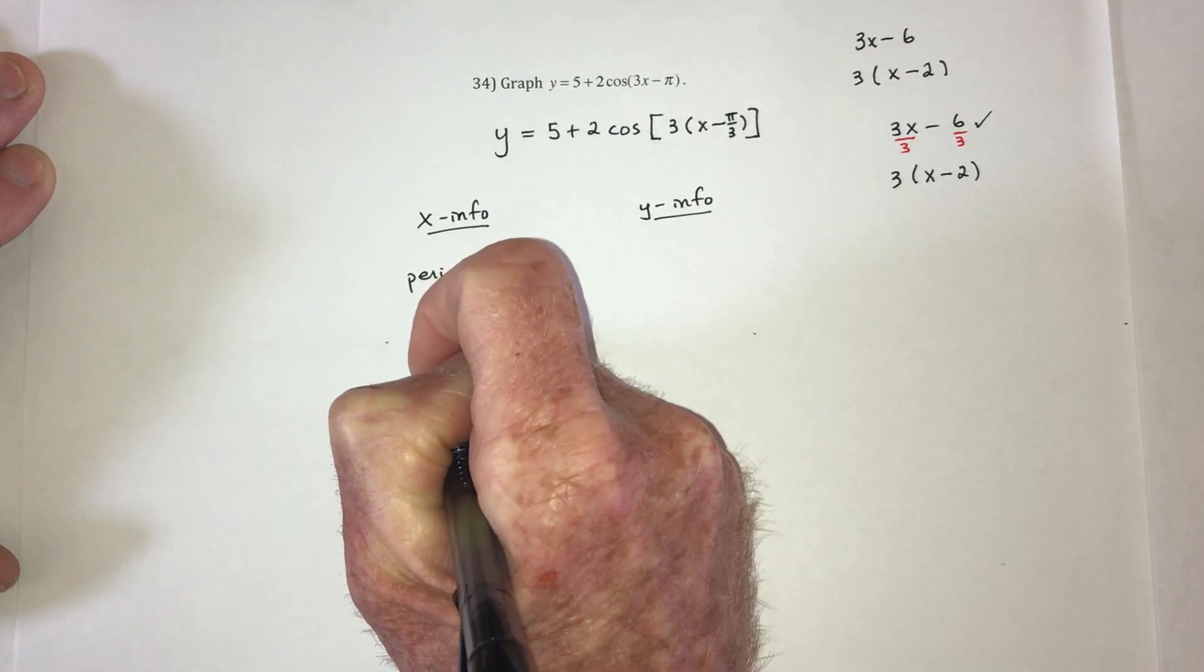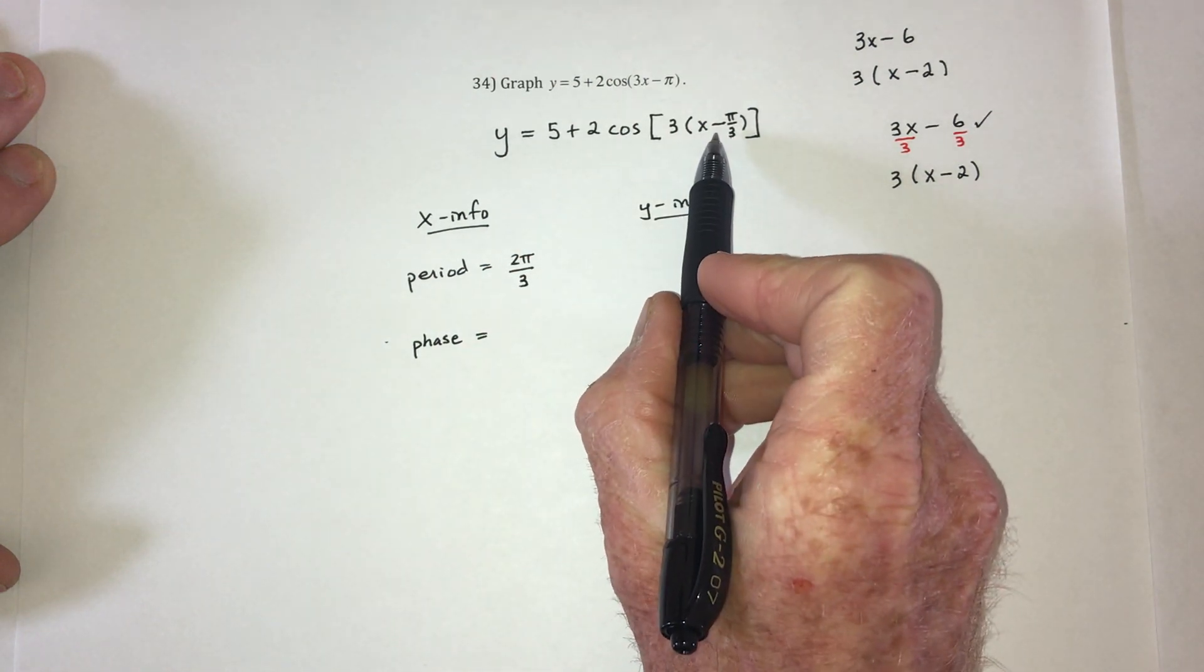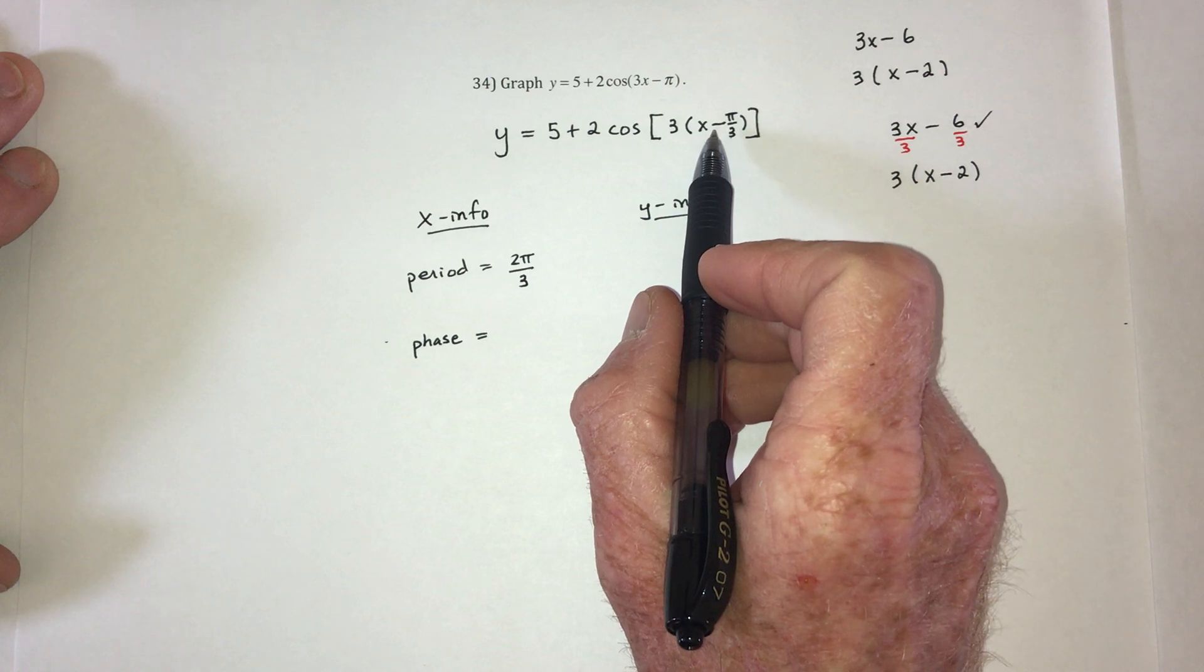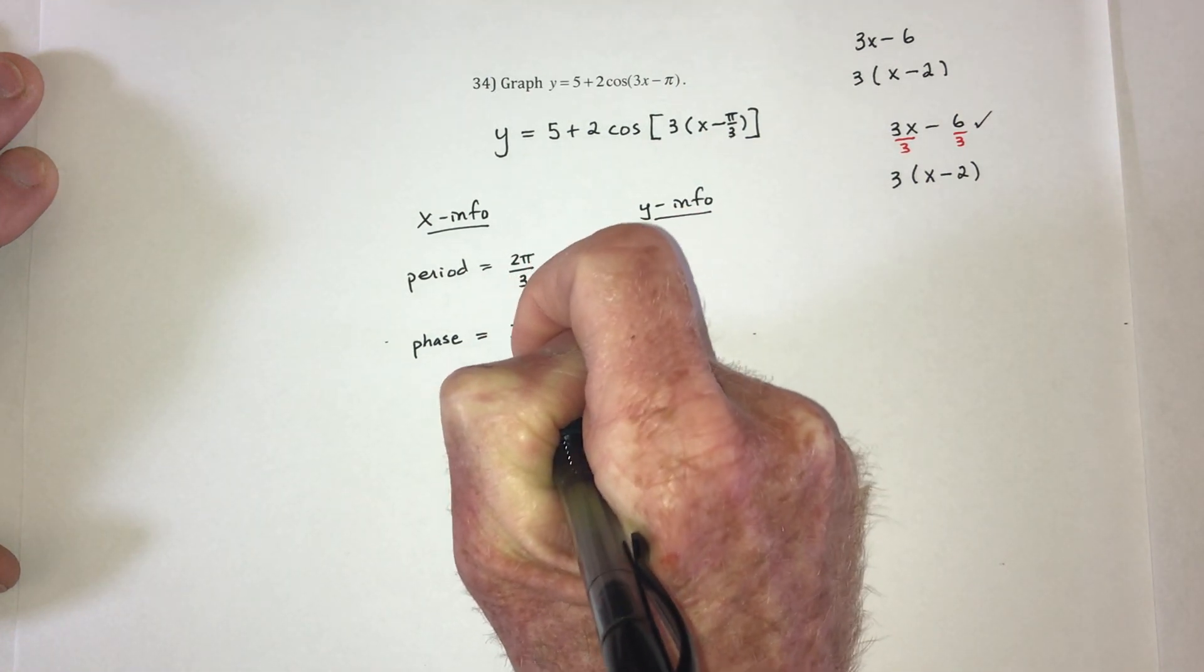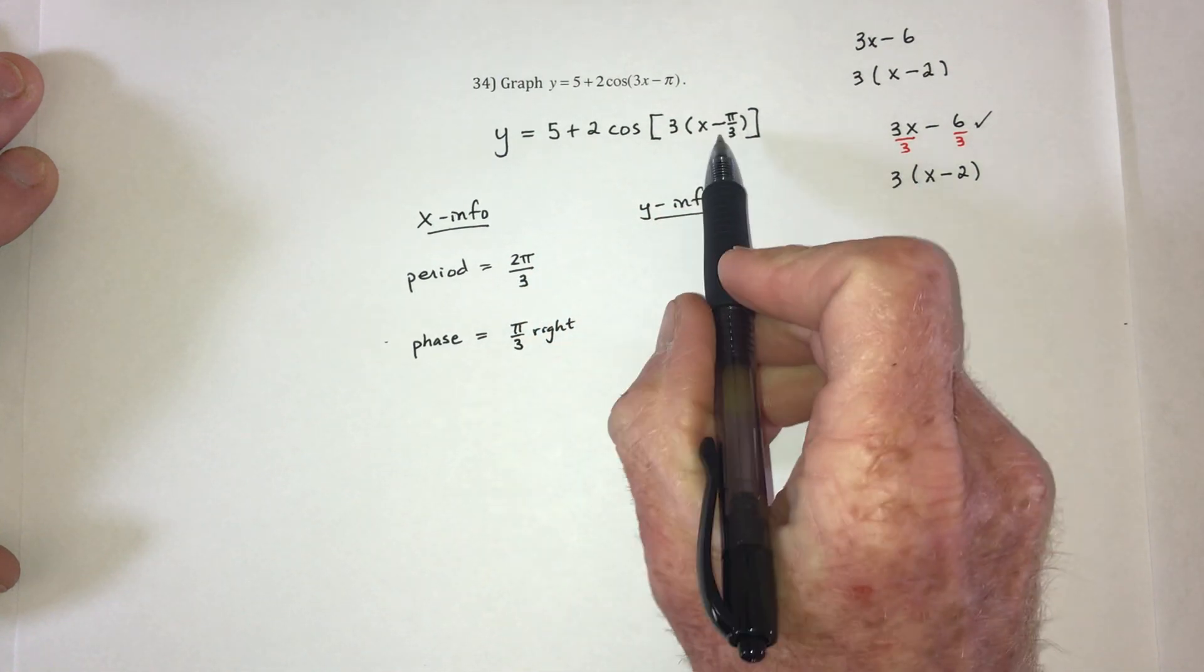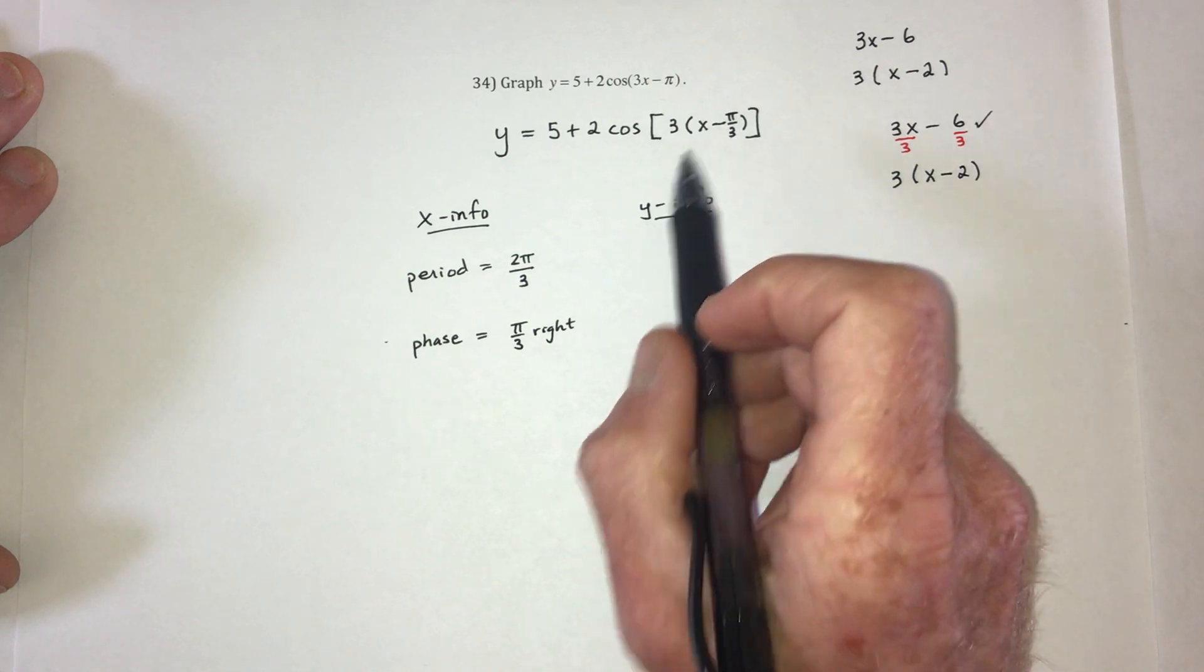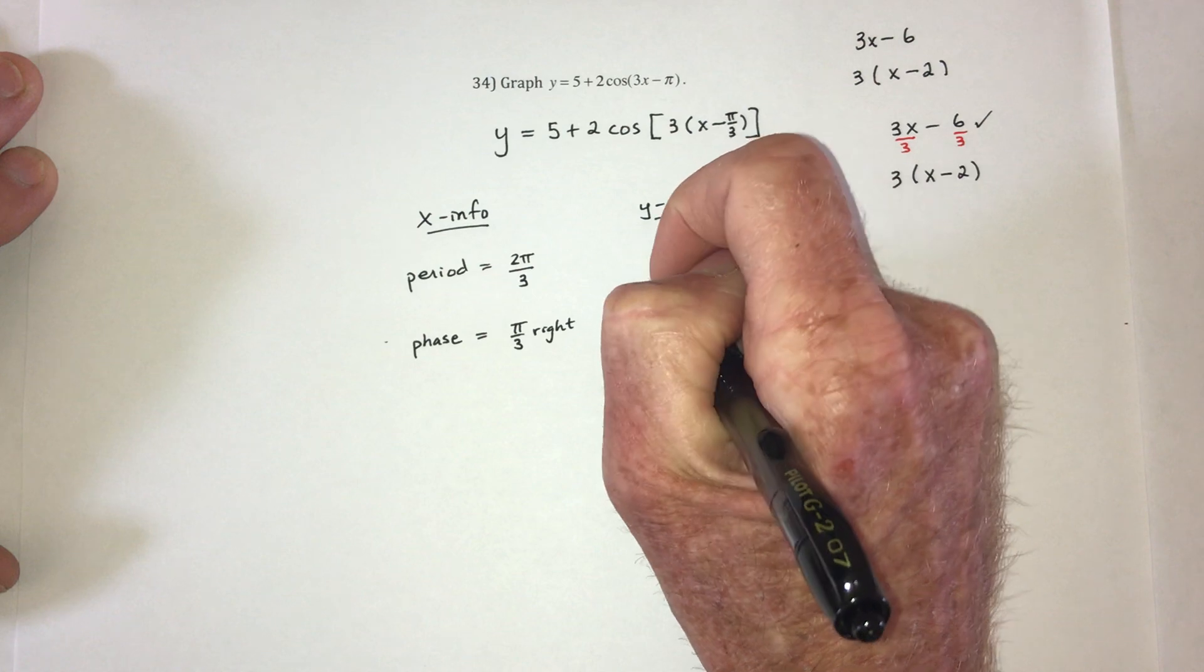Next, the phase shift. So that's this number right here. When it says subtract, it actually moves it to the right. If this would have said plus π over 3, that would actually move it to the left. With a minus, it moves it to the right.